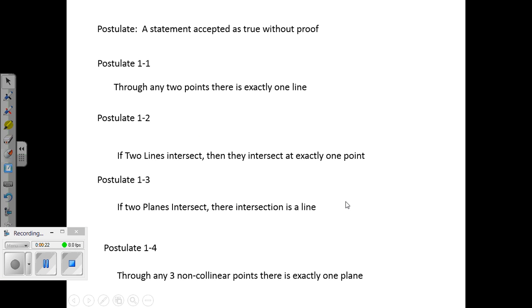So, a postulate is a statement that is accepted without proof. Now, we're going to have a bunch of different postulates. We're going to tag them according to the chapter that they occur in, in the sequence. Postulate 1-1 is the first postulate of chapter 1. Postulate 1-4 is the fourth postulate of chapter 1, so on and so forth.